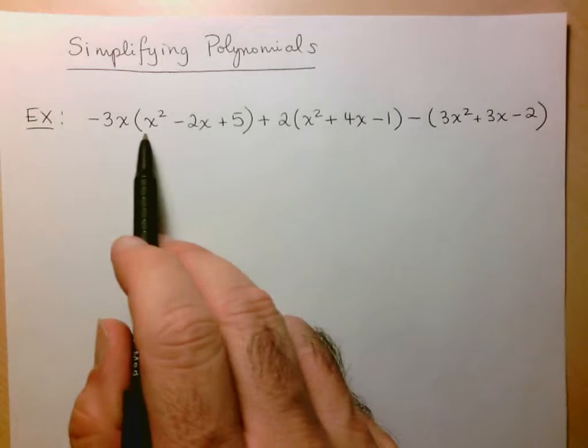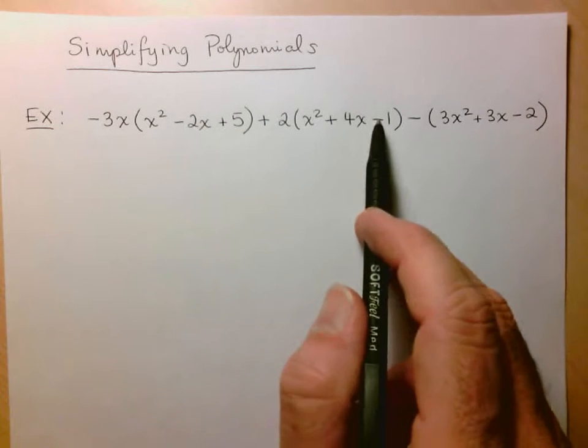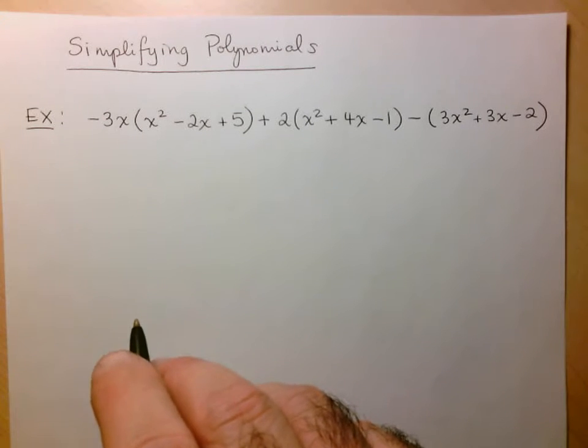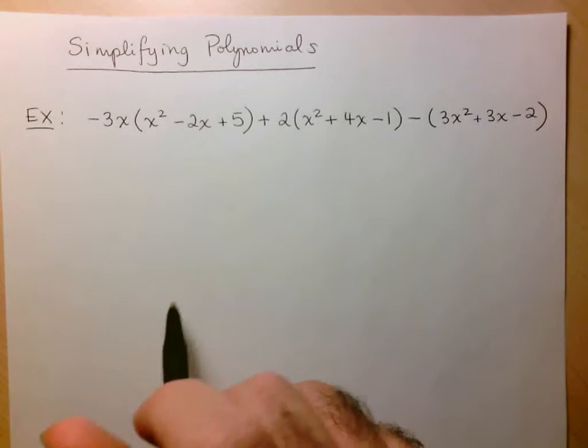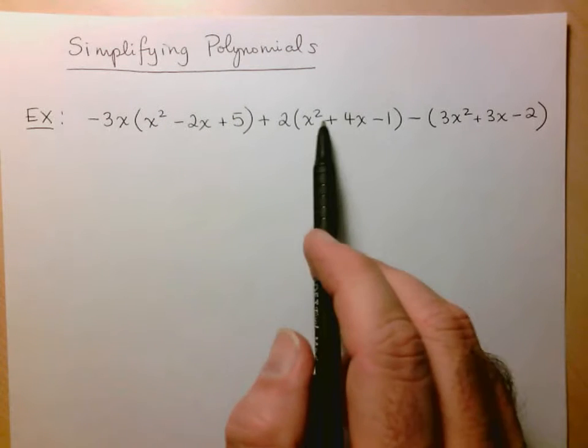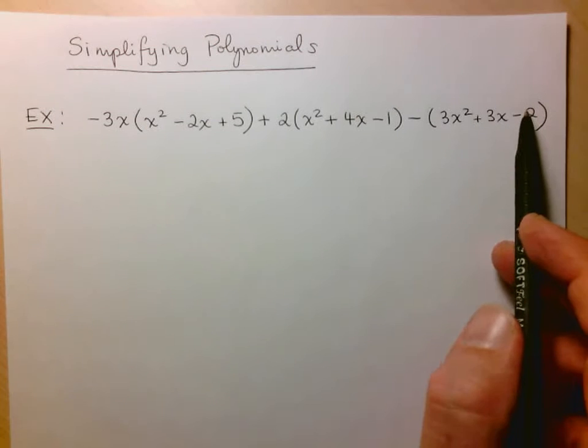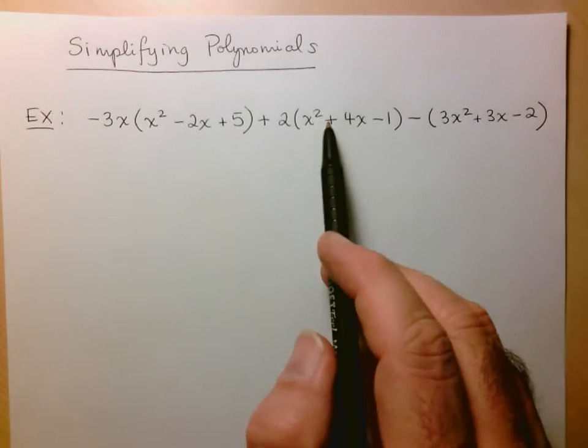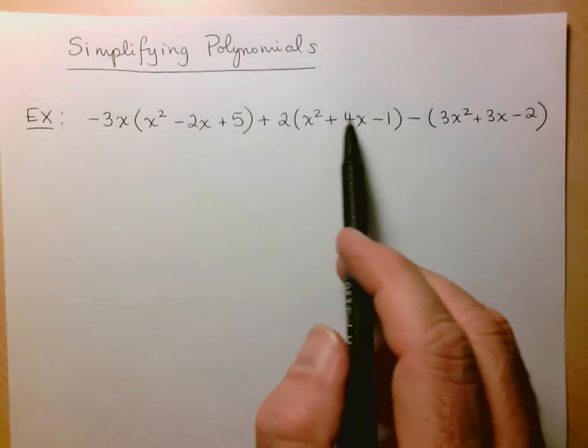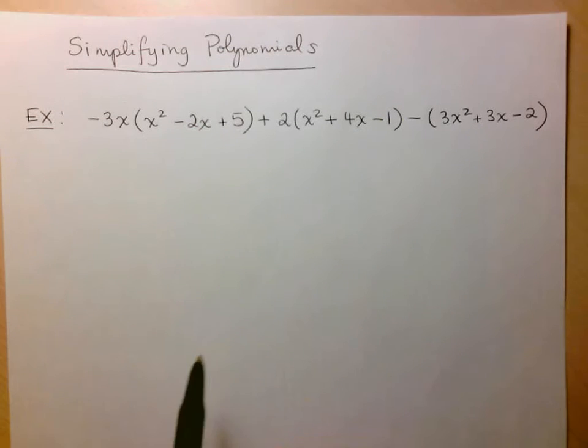So here we've got polynomials inside our brackets. And since these all represent numbers, we have to think about following the rules of BEDMAS. I look here and I see that this bracket and the second and the third are already simplified. We can't simplify these any further because there's no like terms within the brackets. So we've done our due diligence there.